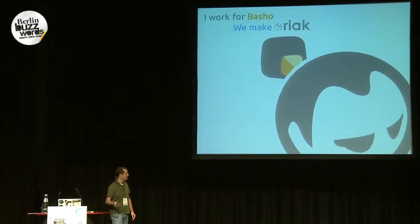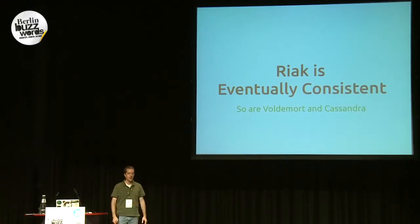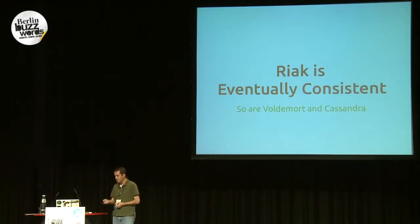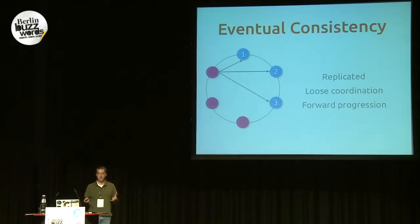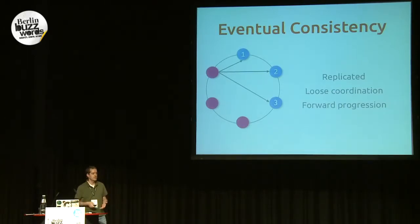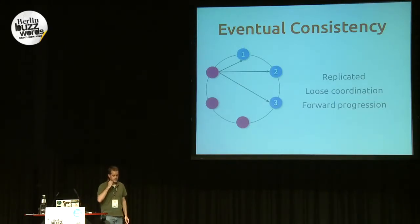A little bit about Riak. Riak is eventually consistent, and incidentally so are Voldemort and Cassandra. So if you have experience with either of these three, you might have a little bit of background for what I'm going to talk about today. Eventual consistency is interesting because in an eventually consistent system, you tend to have multiple copies of the same data, which means it's replicated. So this gives you things like availability and fault tolerance.